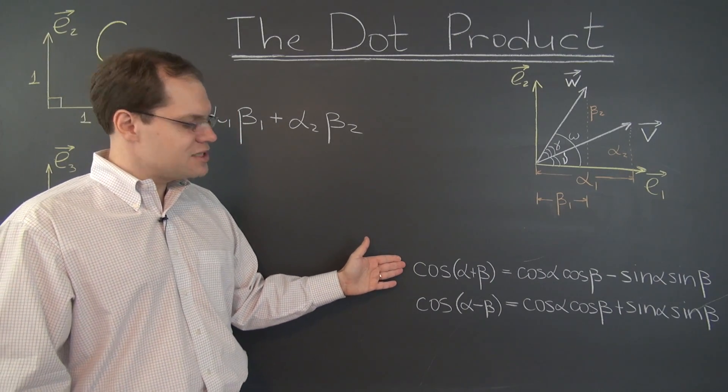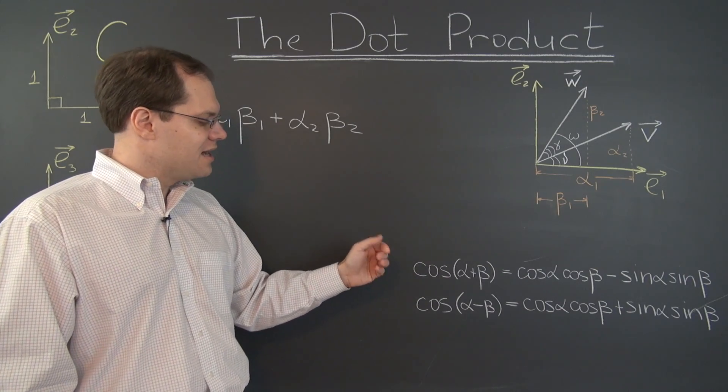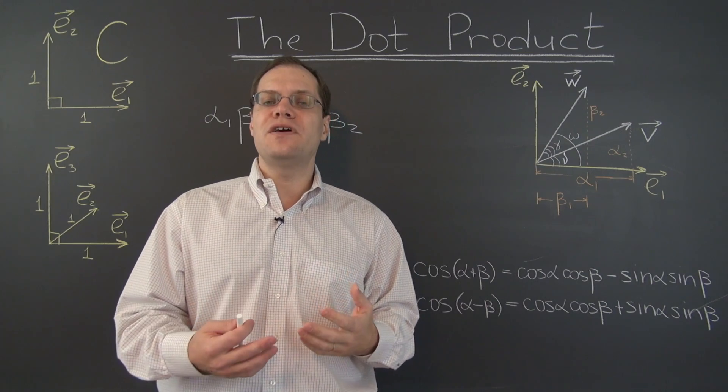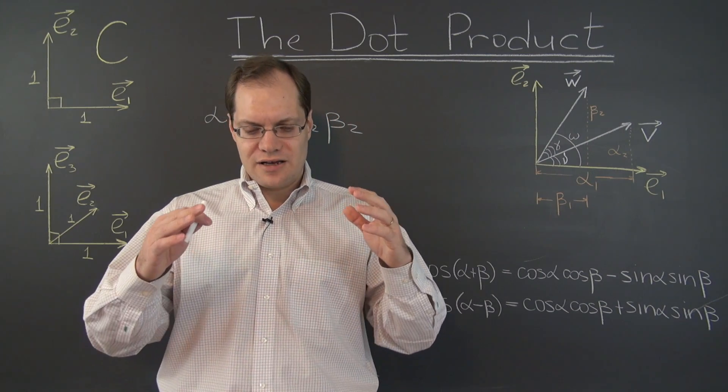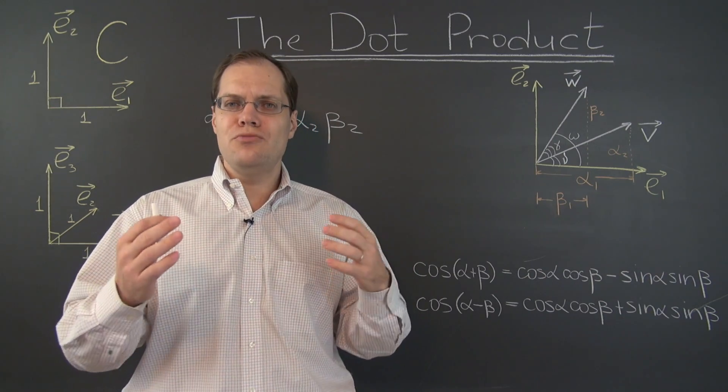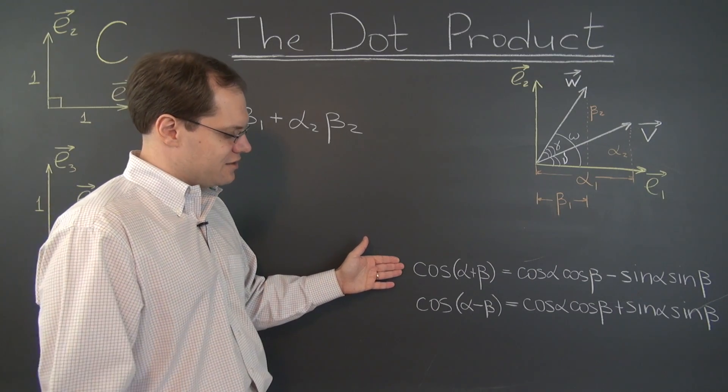But it only relies on this one trigonometric identity. And if you don't remember the identity for the cosine of the sum of two angles, in a few videos when we talk about rotations in the plane and their matrix representations, you'll have a great mnemonic rule for remembering this formula if you ever forget it.